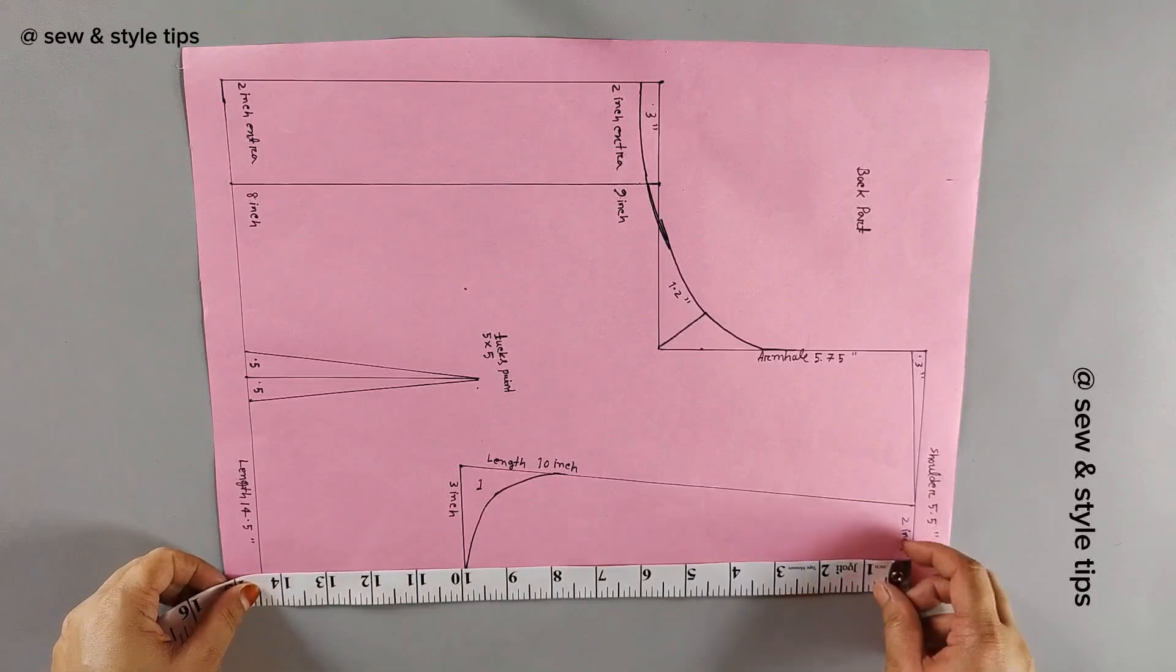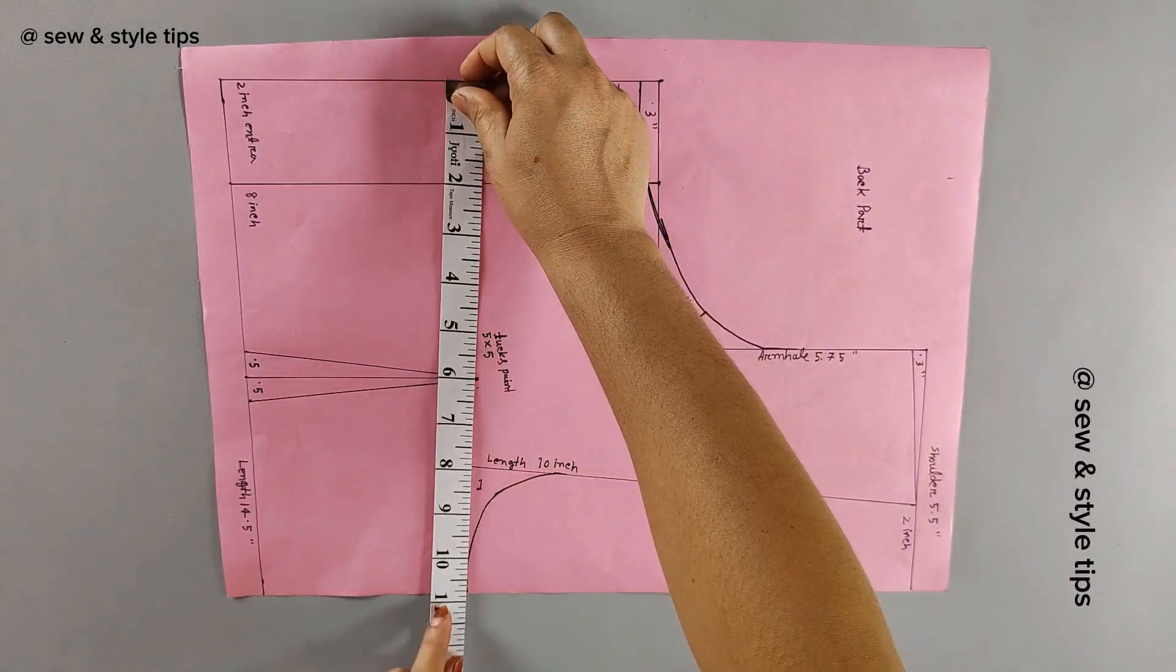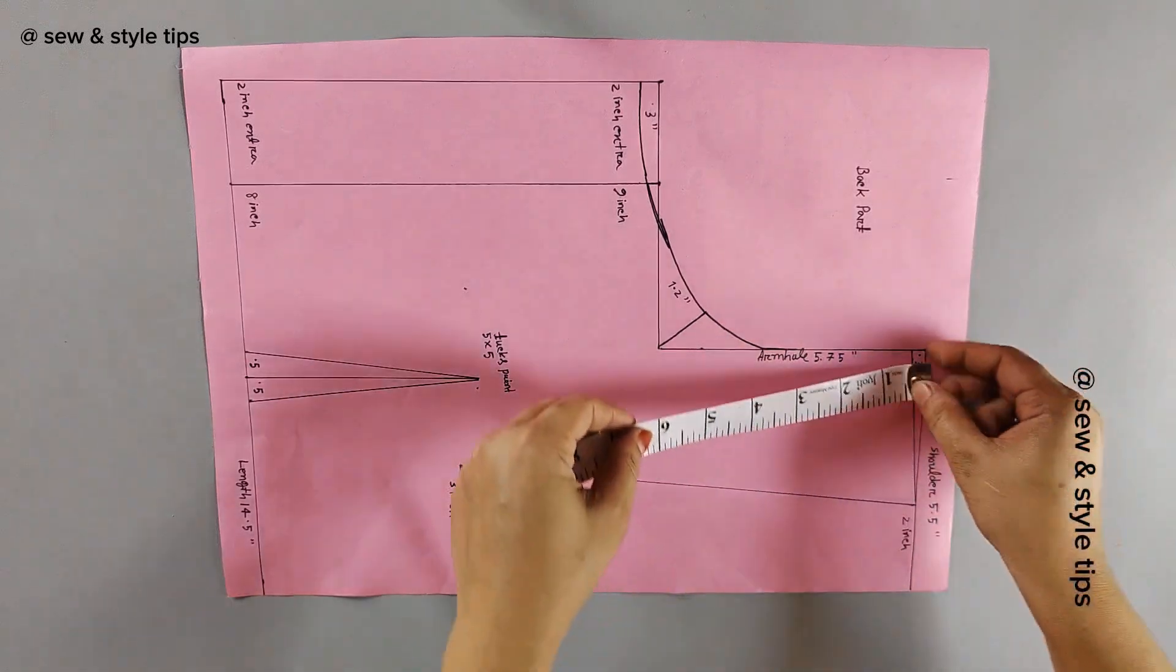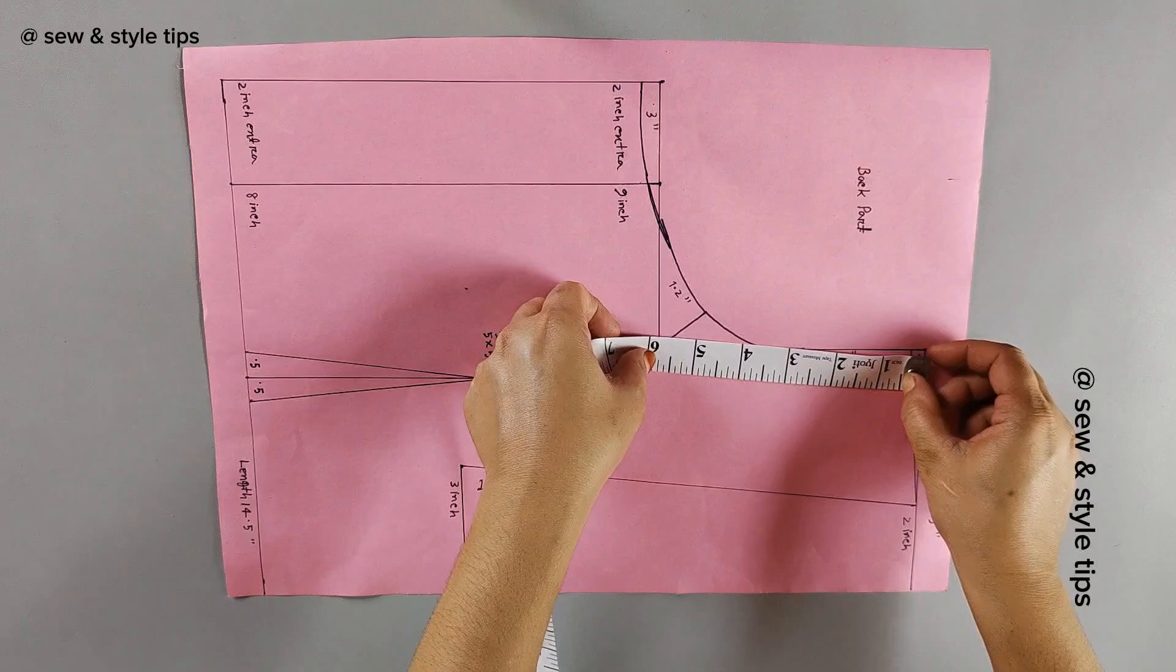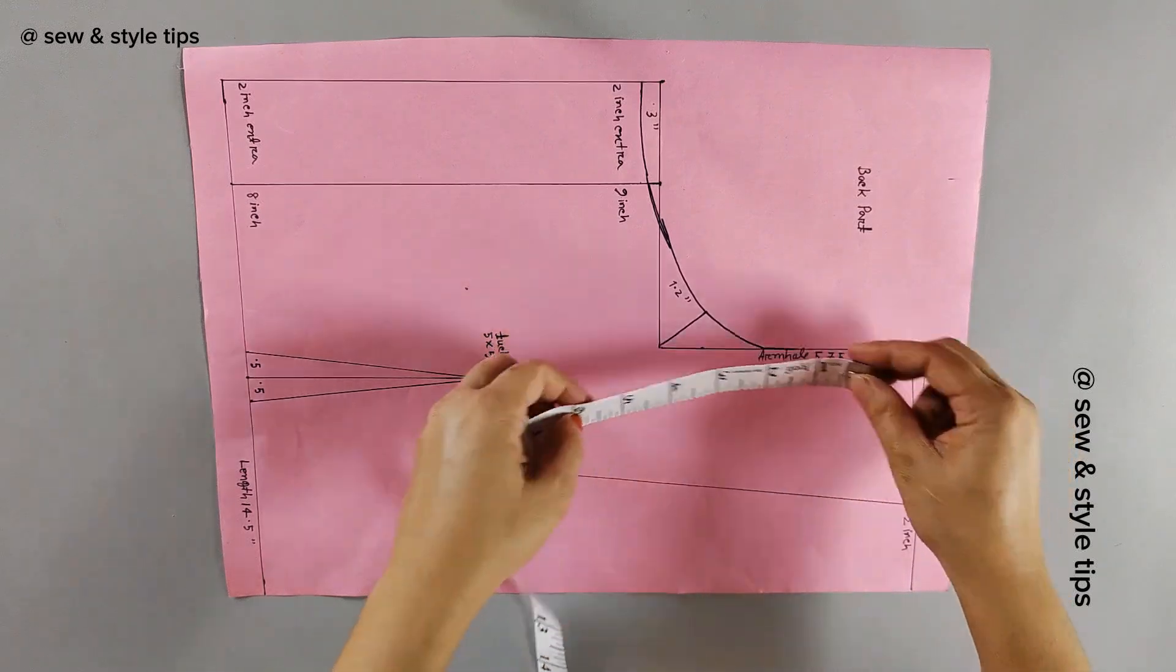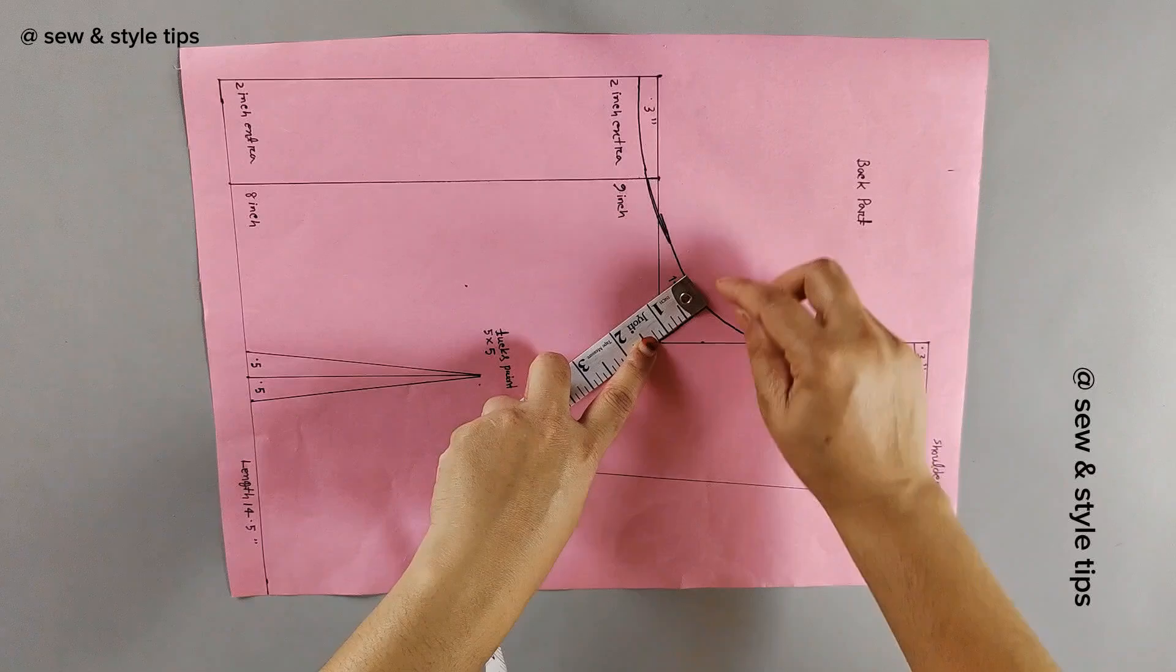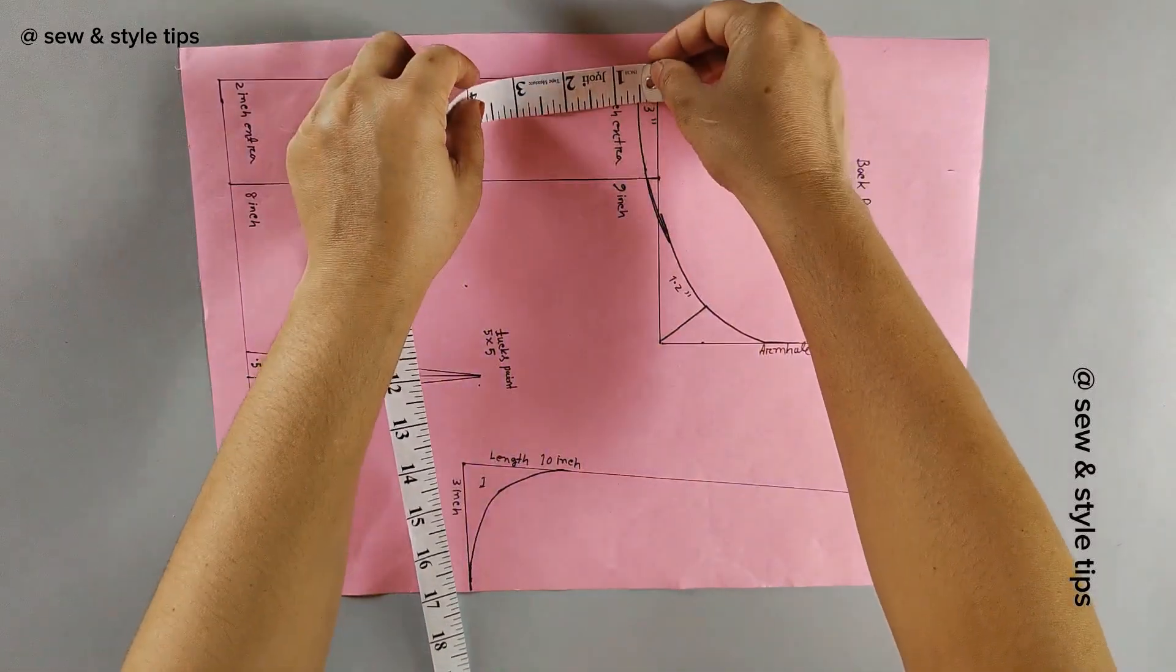First measurement is 1.2, then 1.3. Next measurements are 3.1, 3.5, 5.75, and 2.5. Then we have 3.1, 2.1, and 4.5.